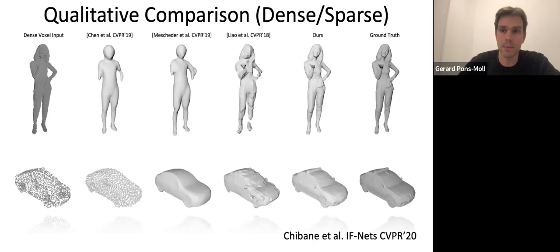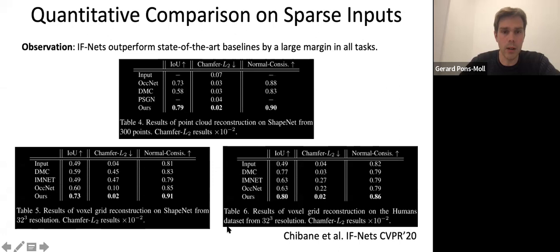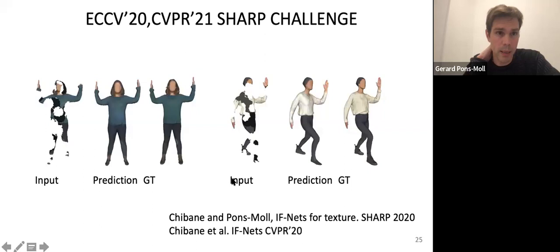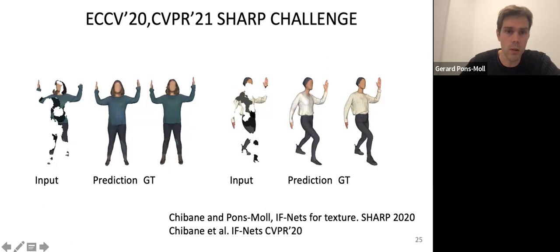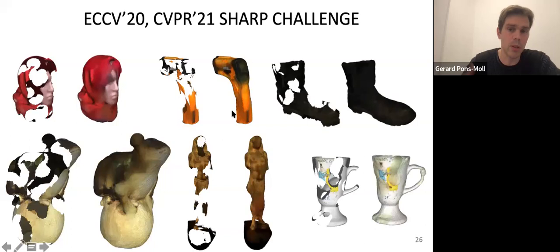Numerically we also outperformed the methods at that time. We also used this method to compete in two challenges — CVPR20 and CVPR21 — called the SHARP challenges. The task is you're given a scan that is corrupted with missing data, and you need to complete the geometry and texture as well. We didn't adapt the method at all, and basically we won all tracks both years for humans and also objects, which verified that this is actually quite a robust algorithm. We use it for many of our follow-up works.